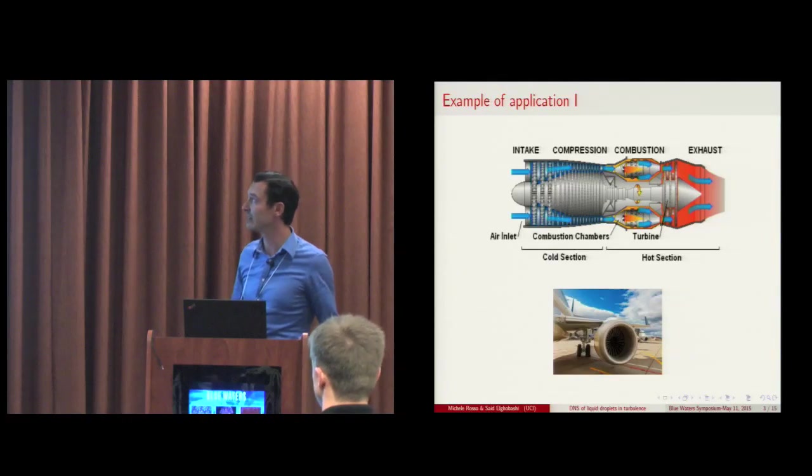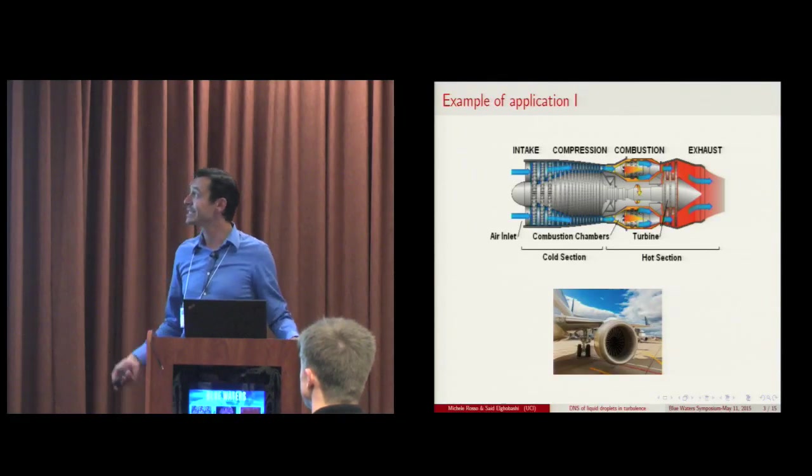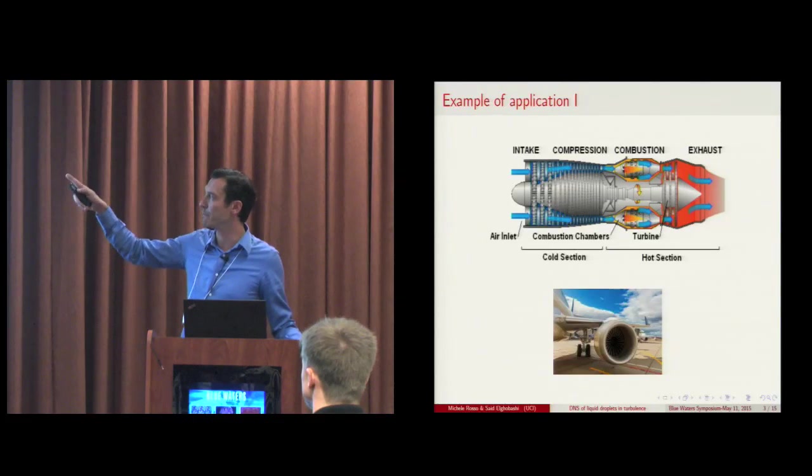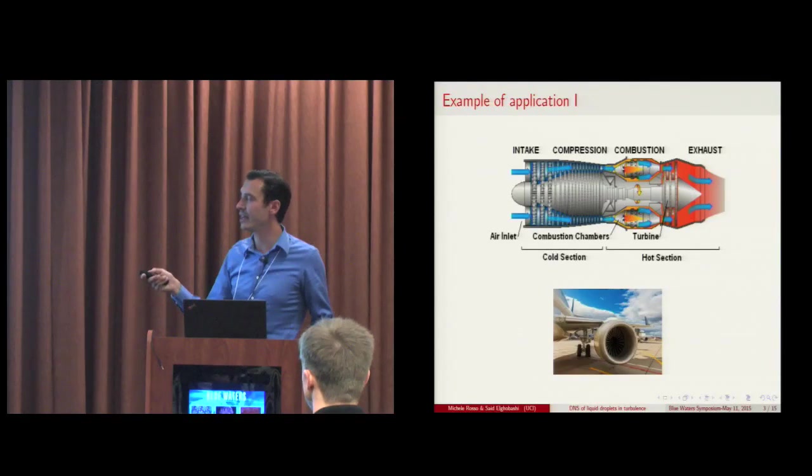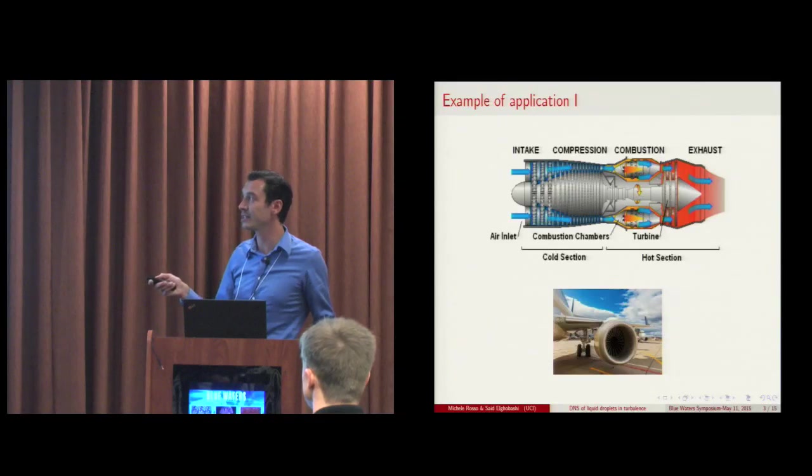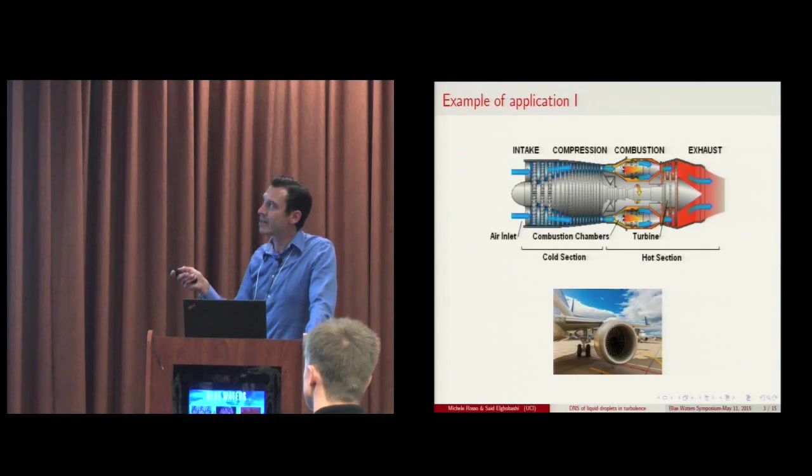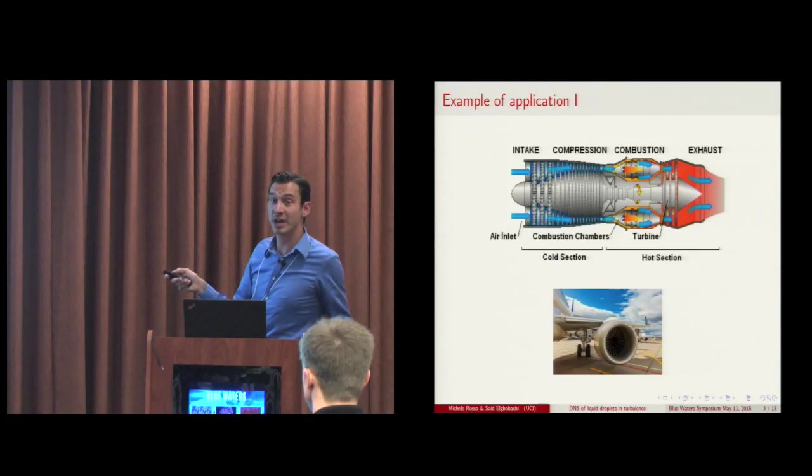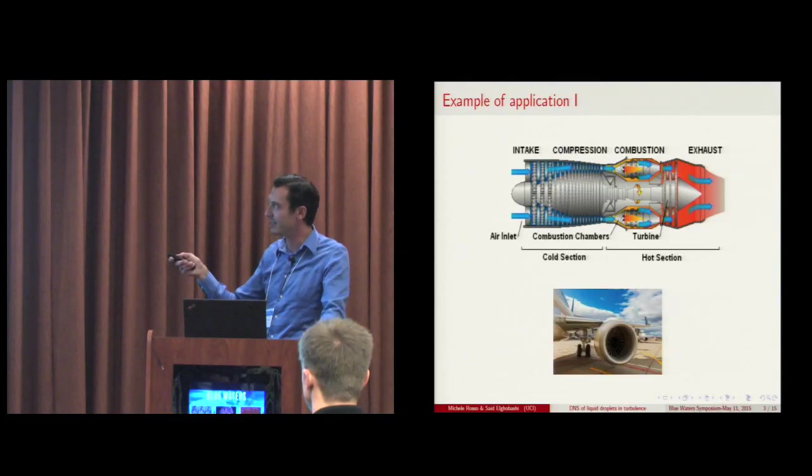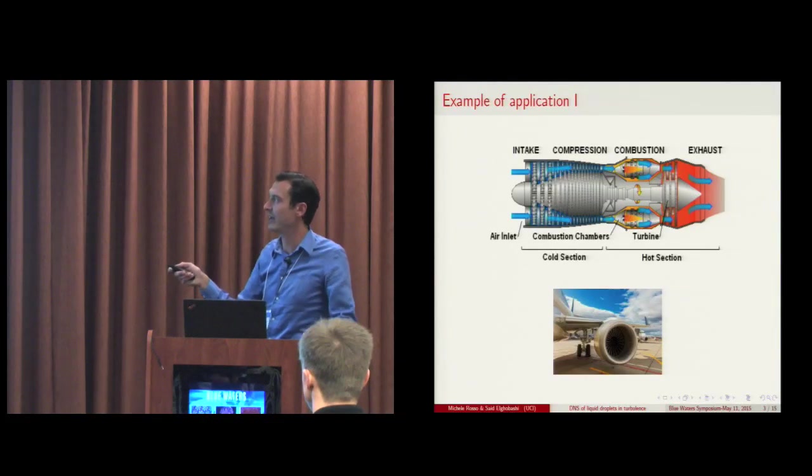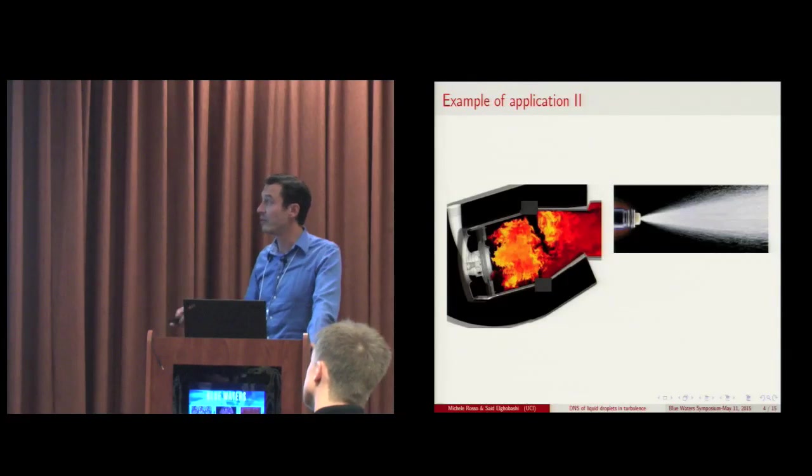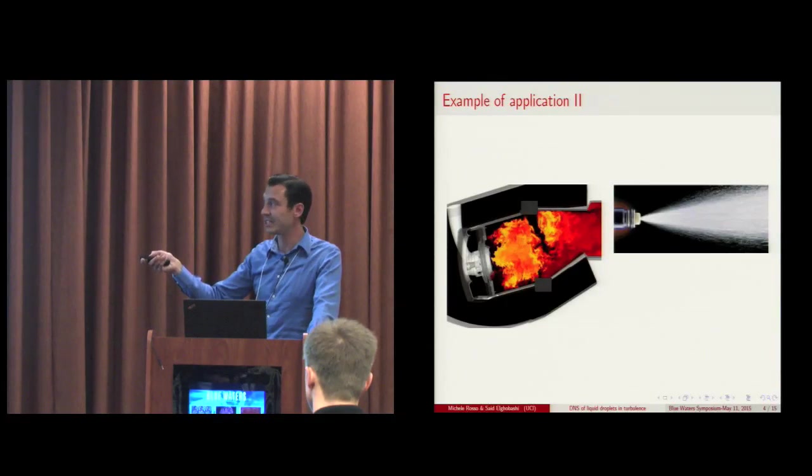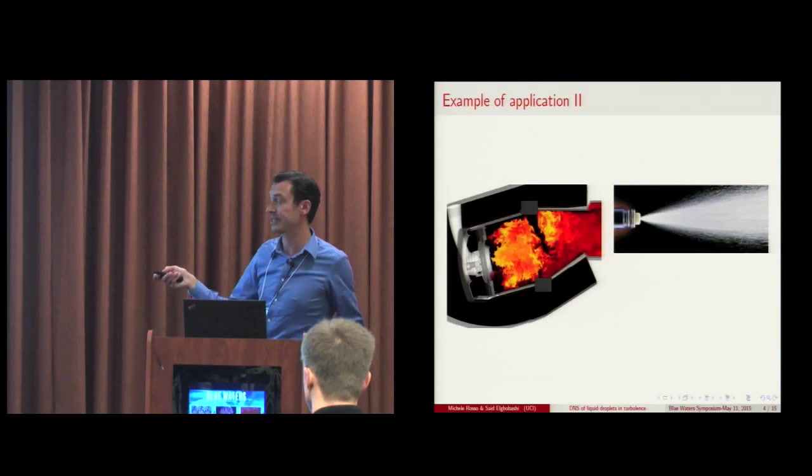One very important application, here is an example, is the study of the physics in the turbulent combustion process inside of a jet engine. You can see a schematic here. The air enters through an inlet and is then compressed via a compressor and then ends up in the combustion chamber where the fuel is sprayed inside and ignited. Finally the exhaust goes through a turbine and finally outside. So for a jet engine we have various combustion chambers where actually the turbulent combustion takes place.